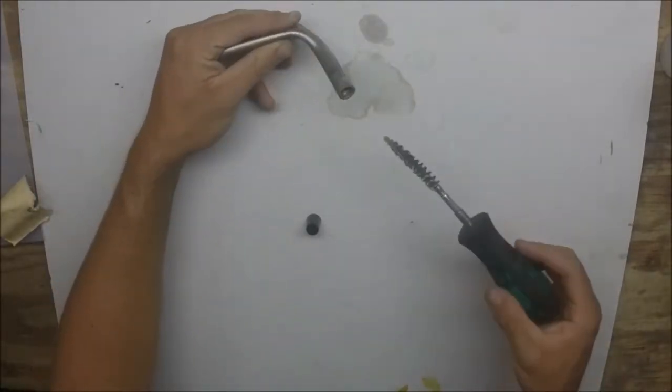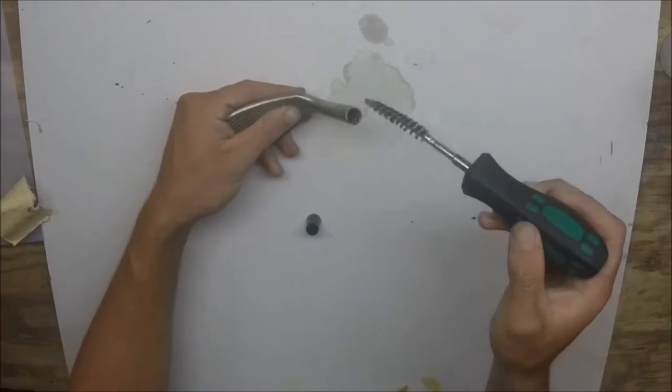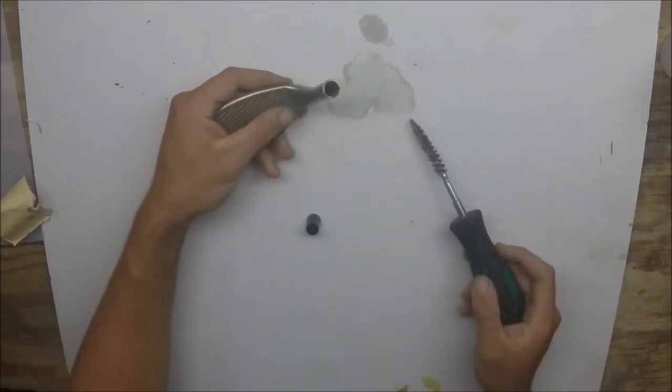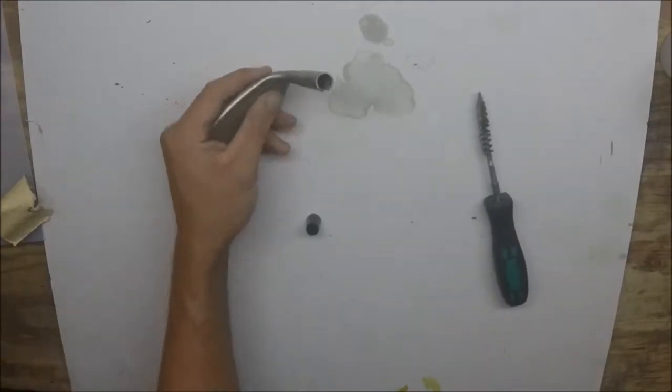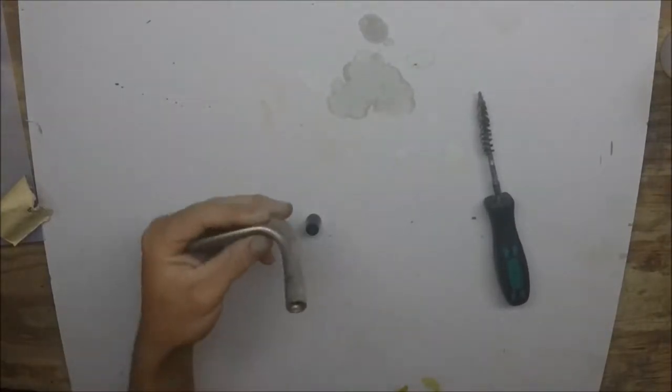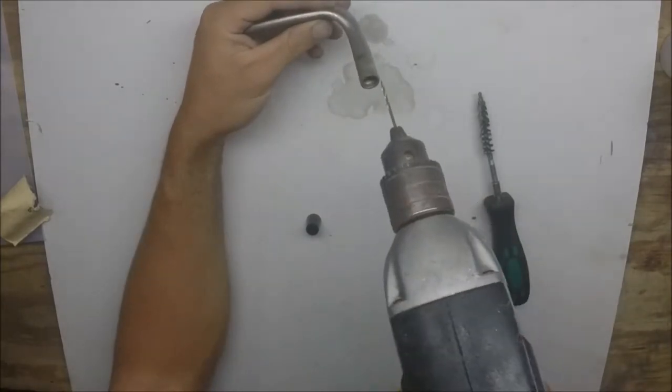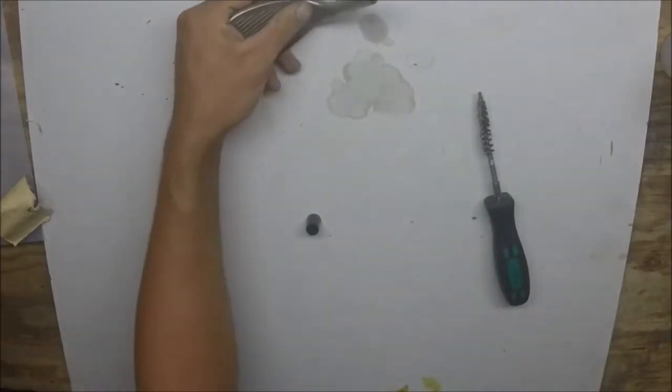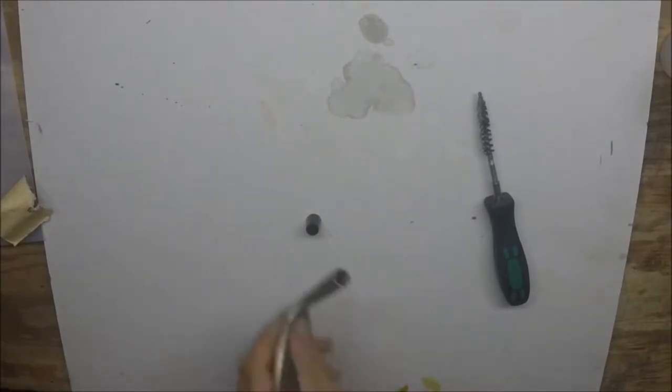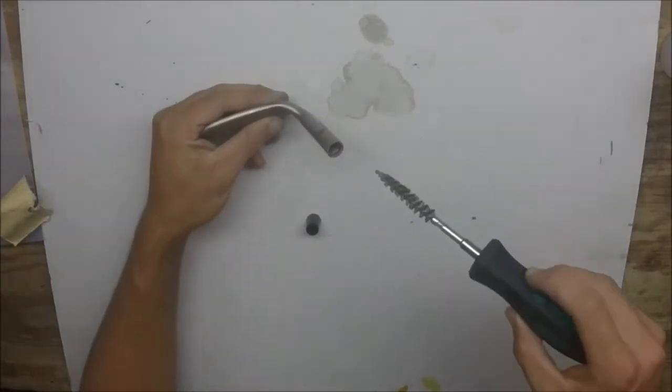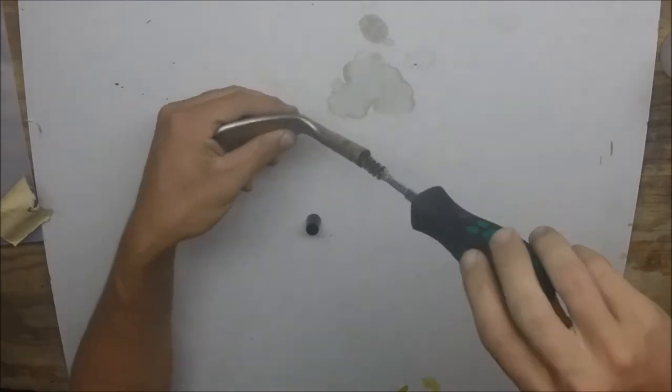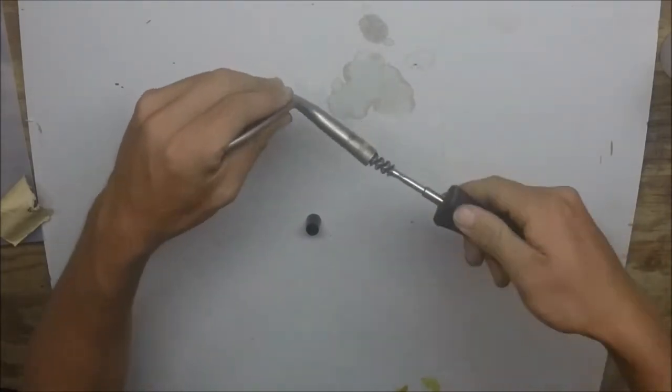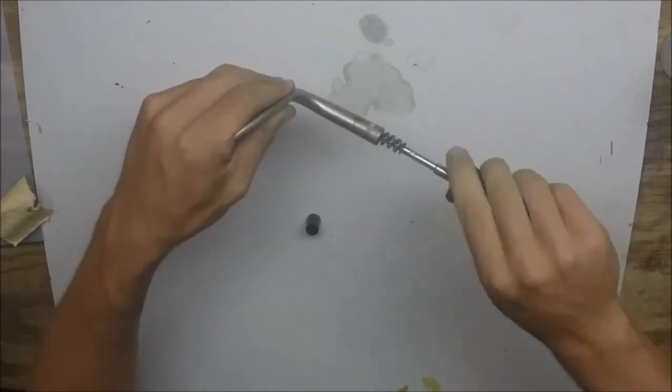And then finally, if there's any epoxy built up in the hosel of the club head, you can drill it out with the drill. So in this case there's nothing in there really, but you would just take a drill bit and drill that out. But since I don't have anything built up in there, I'm just going to take one last cleaning. Make sure that there's nothing in there still.